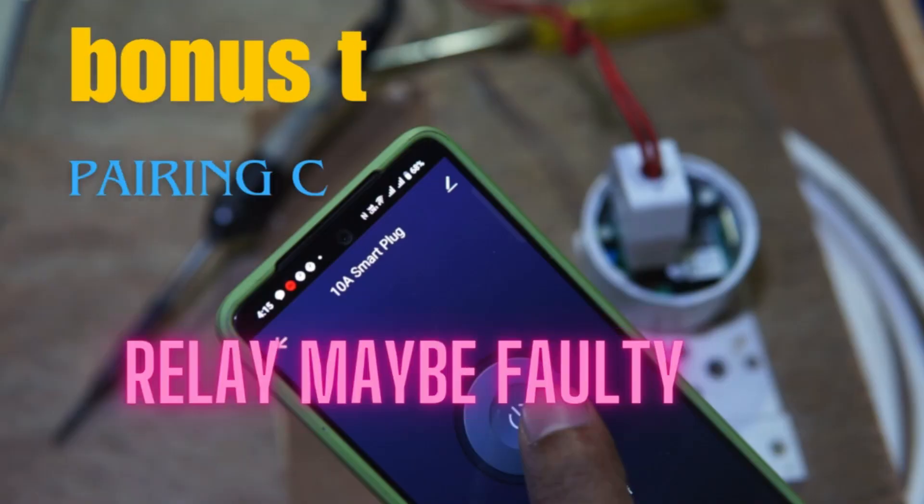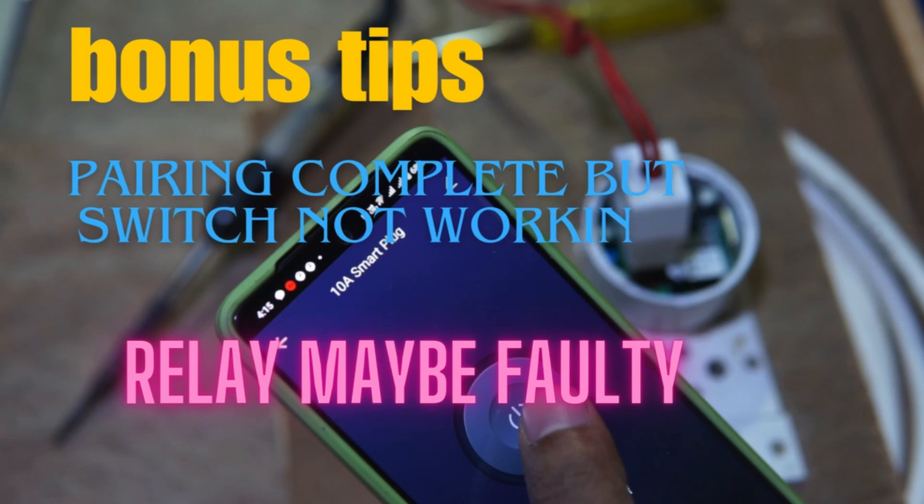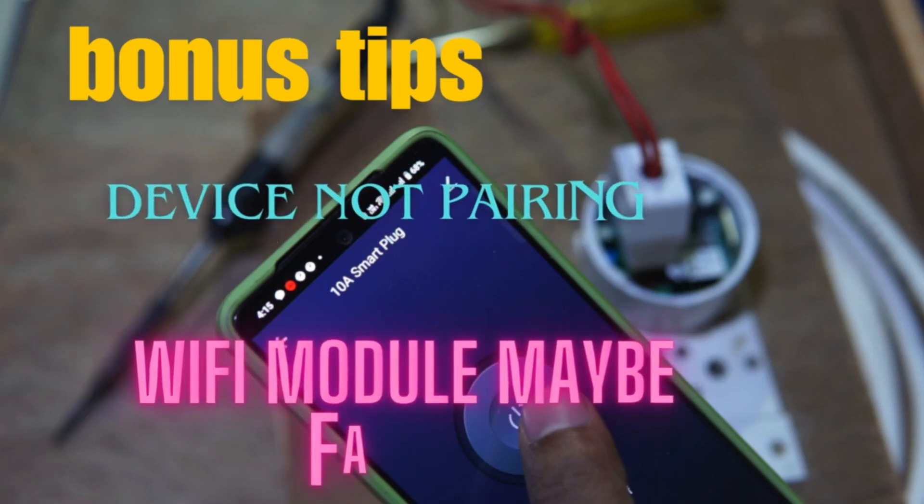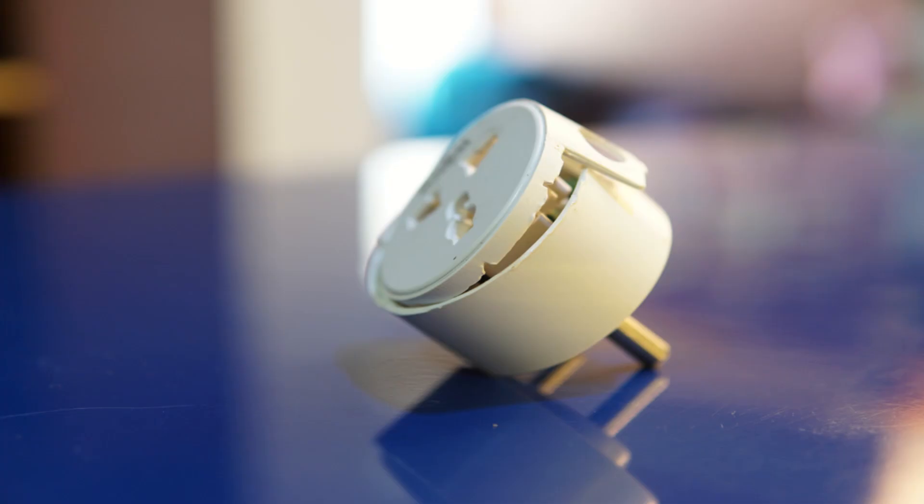Some bonus tips. If the setup is complete but switch not working, the relay may be faulty. If the pairing is not working, the Wi-Fi module may be faulty. But these chances are rare. Most of the time the fault is found in the capacitor due to overheating of the sealed chamber and lack of heat exchange.